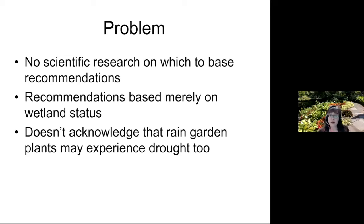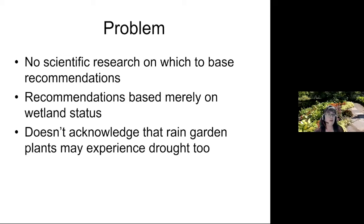There's also the fact that we have different climates. Minnesota is quite a bit wetter than North Dakota. In North Dakota, rain gardens may experience a really good thunderstorm but then stay dry for weeks. So our plants would experience cyclical saturation followed by long periods of drought. We wanted to study plants to see how well they could take that double whammy of flooding alternating with periods of drought.